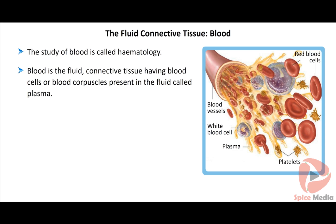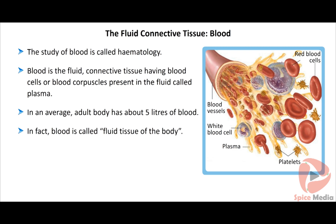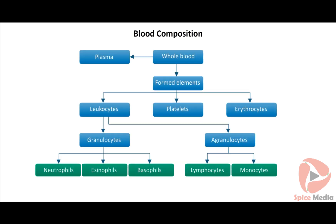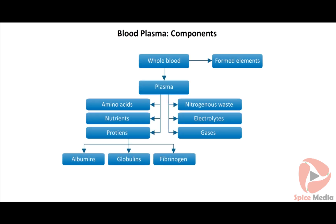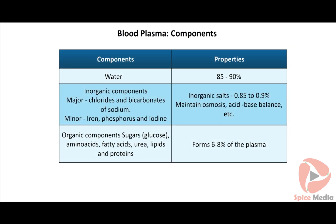The study of blood is called hematology. Blood is a fluid connective tissue having several different types of cells present in the intercellular fluid called plasma. These cells are called blood cells or blood corpuscles. An average adult has about 5 litres of blood. Plasma is straw-coloured and clear, slightly alkaline in nature, and constitutes about 60% of the total volume of the blood. About 85–90% of plasma is water, and it consists of organic and inorganic components.